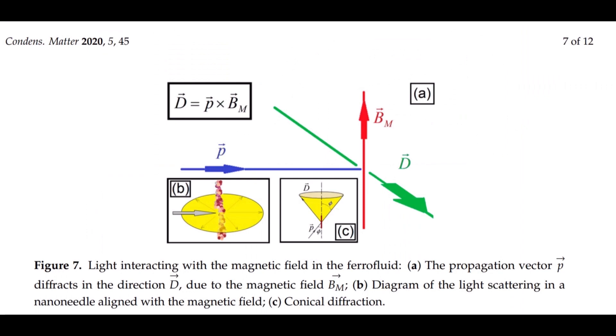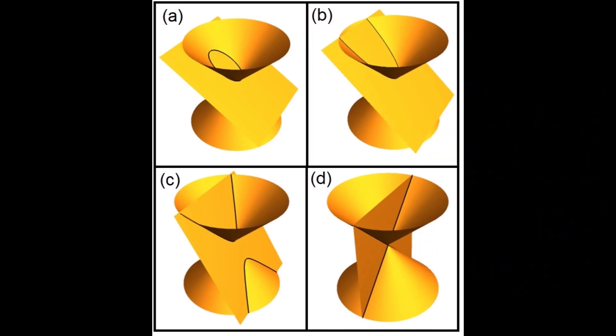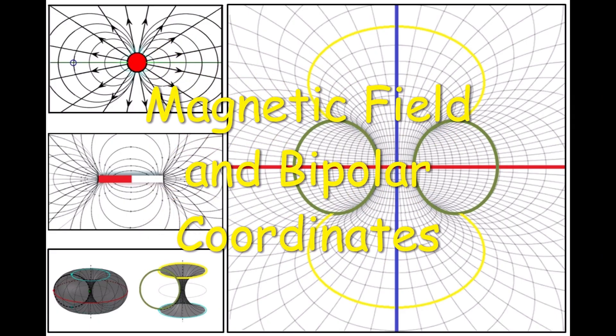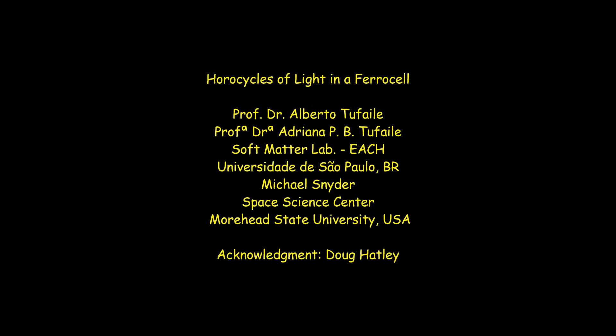Details of the diffraction of light by the needles formed in ferrocell by the magnetic field applied by the magnet, conical sections and the ferrocell, magnetic field and bipolar coordinate. Thank you for your attention.